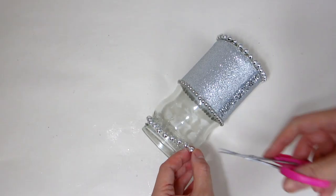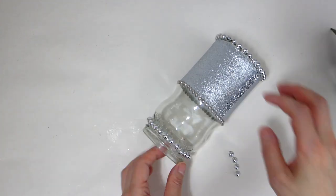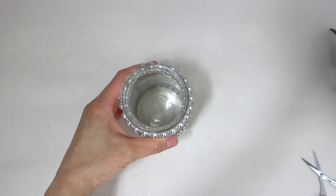Here you can see I have also decided to apply a string of silver beaded necklace around the neck of the jar right below where the lid would sit.